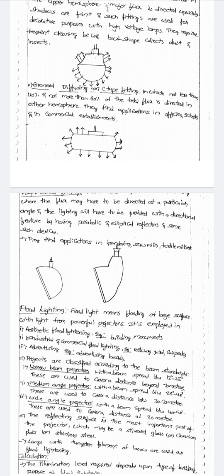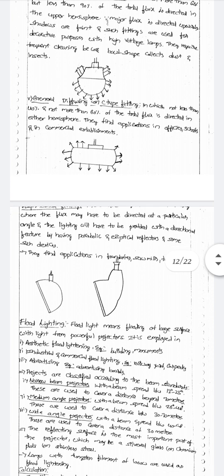The next one is general diffusion, or C-type fitting. In this type, not less than 40 percent and not more than 60 percent of the total flux is directed in either hemisphere. Applications are found in offices and commercial establishments.